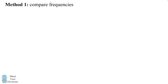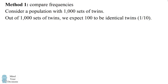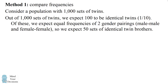In the first method, we'll compare the frequencies. Consider a population with 1000 sets of twins. Out of those 1000 sets of twins, we expect 100 to be identical twins because that's 1 in 10. Of these, we expect equal frequencies of 2 gender pairings — male-male and female-female — so we expect 50 sets of identical twin brothers.